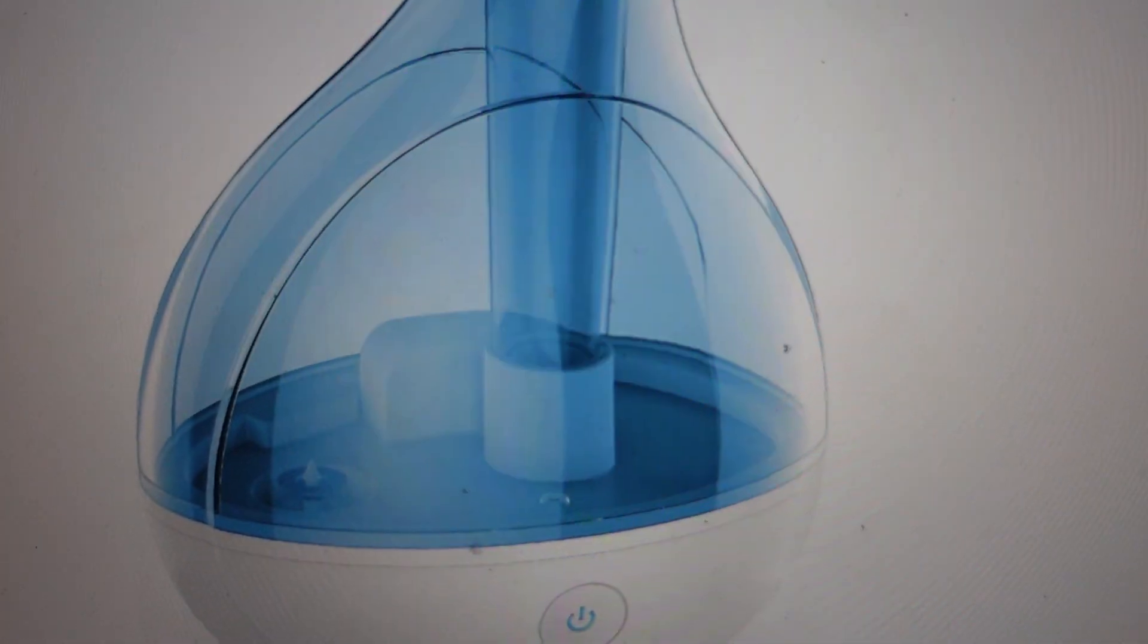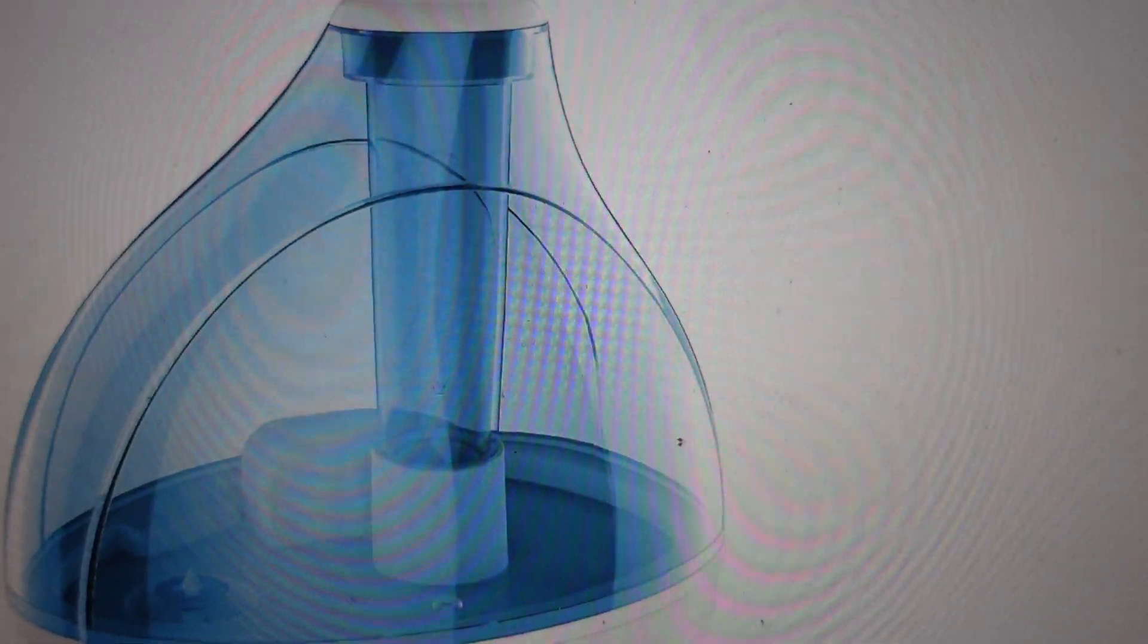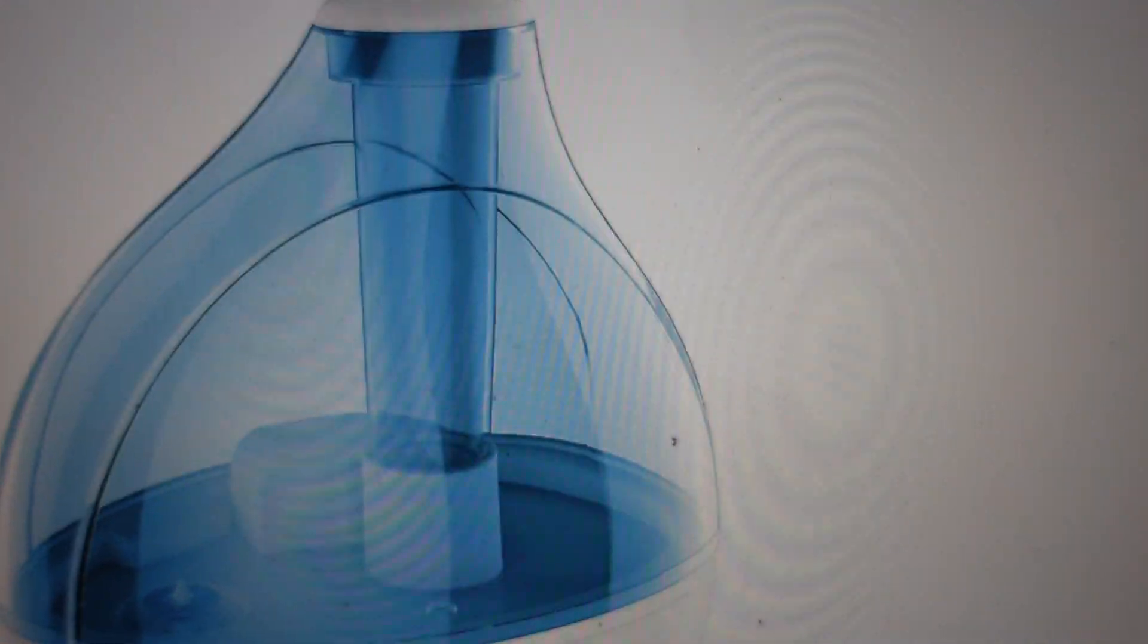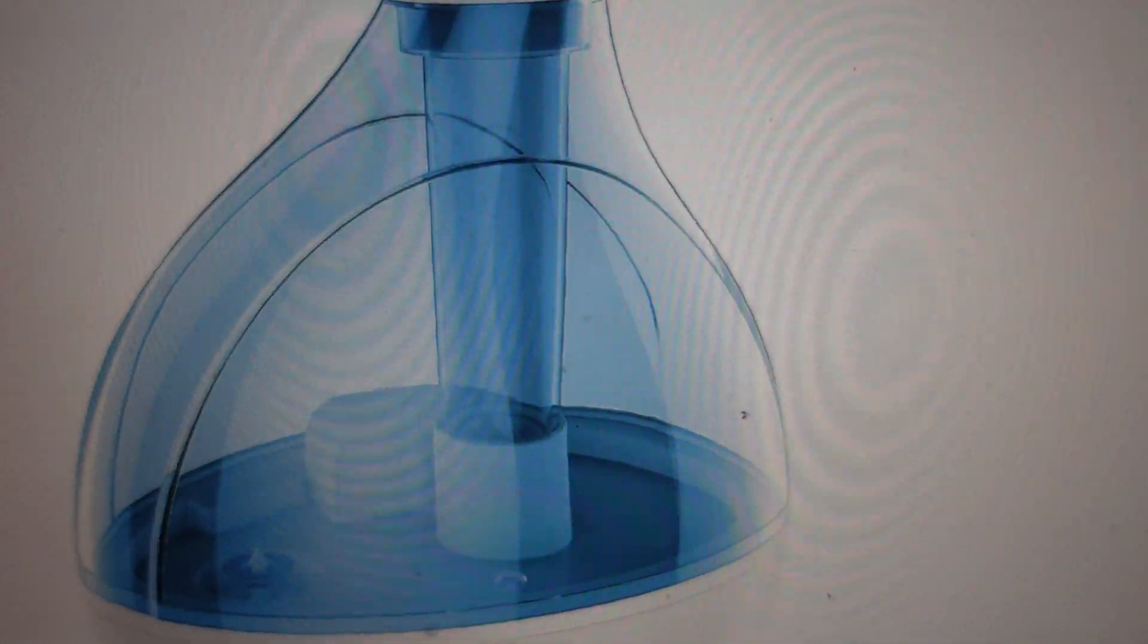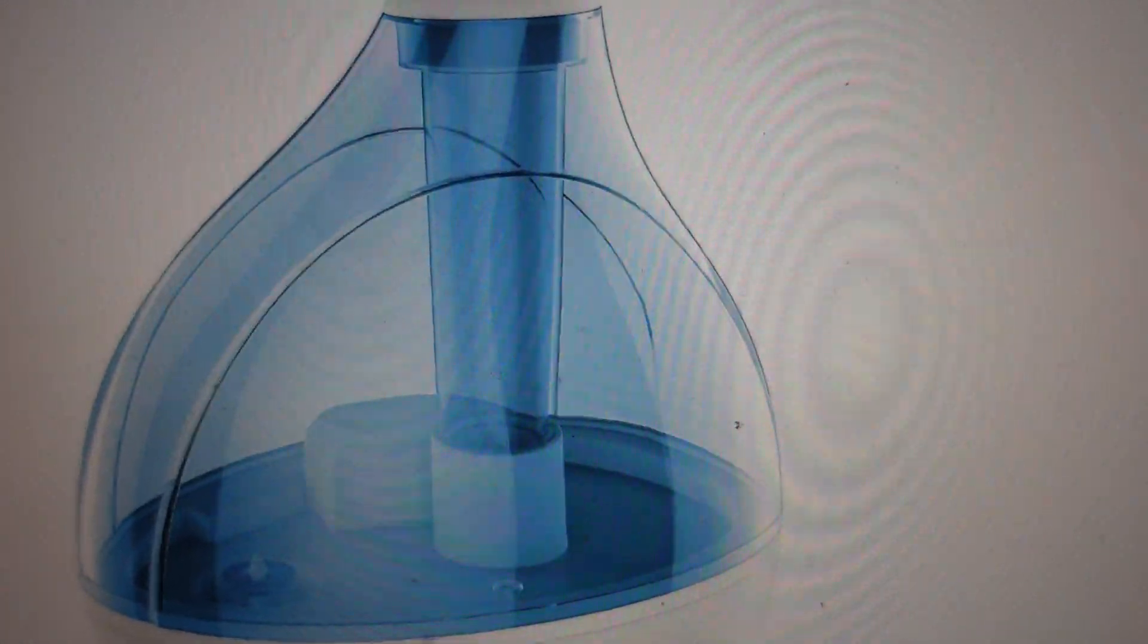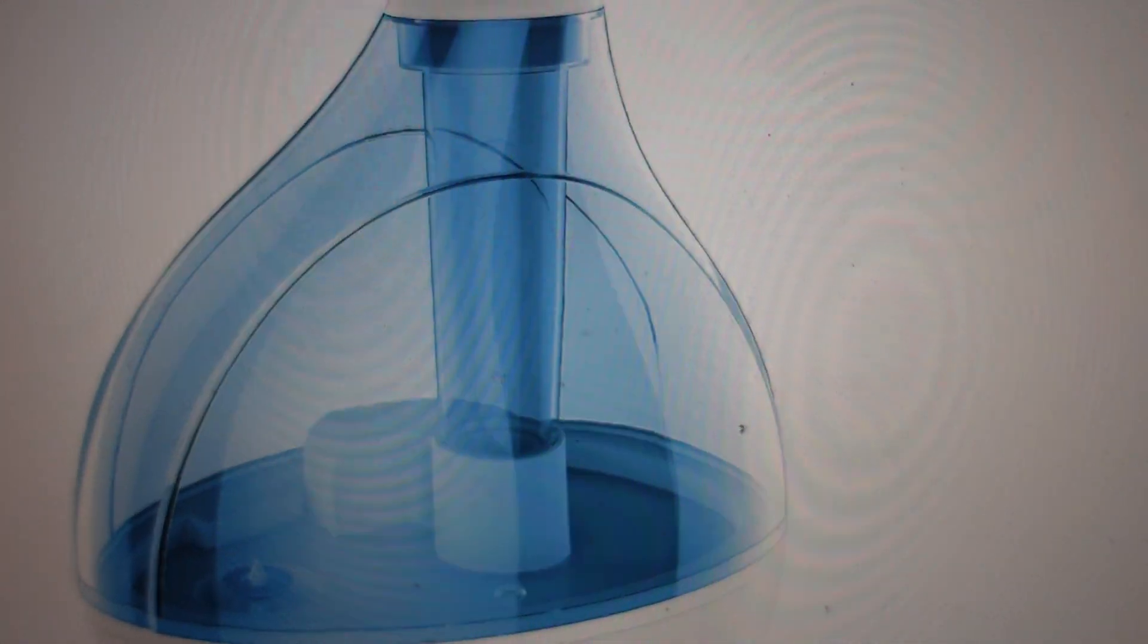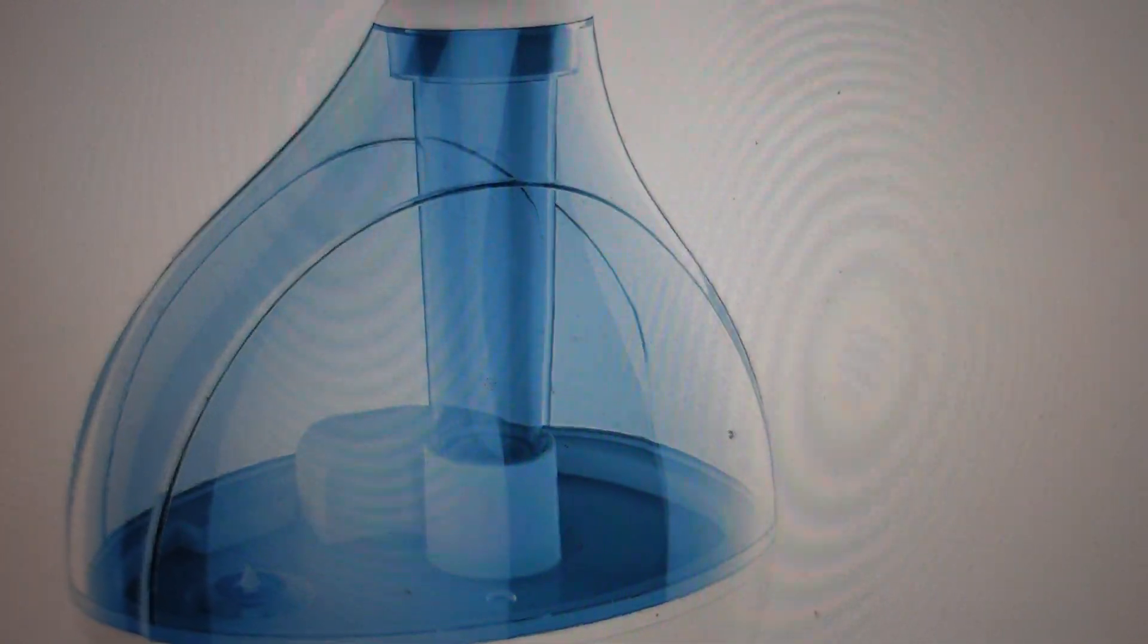Hey everybody, this is a quick video in case you have a Pure Enrichment Mist Air Humidifier and it seems to be working, but the humidity level is low that's coming out of it. So it's working, but the humidity is just not producing that great. What's going on?